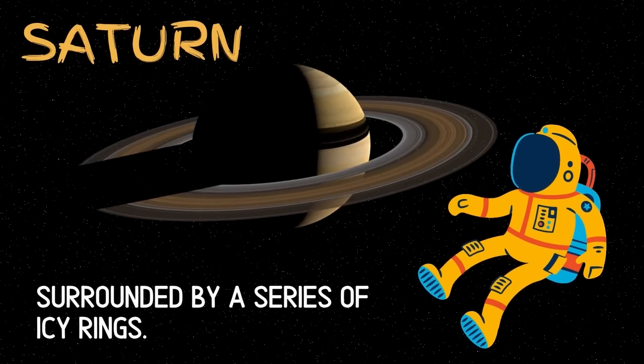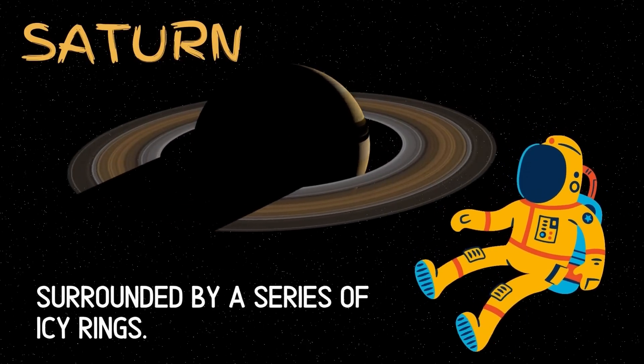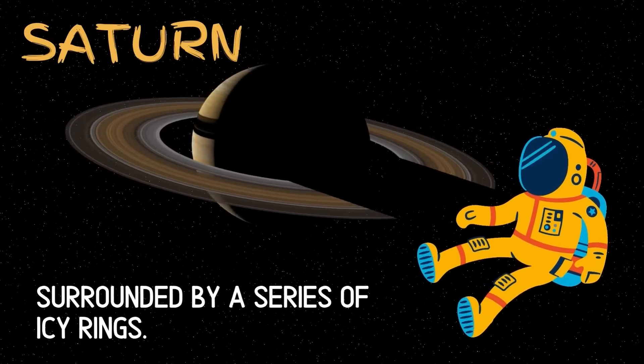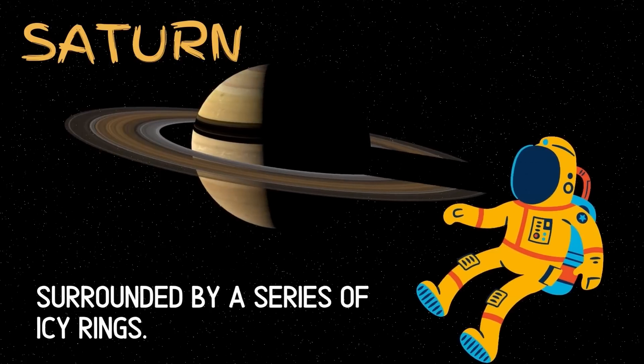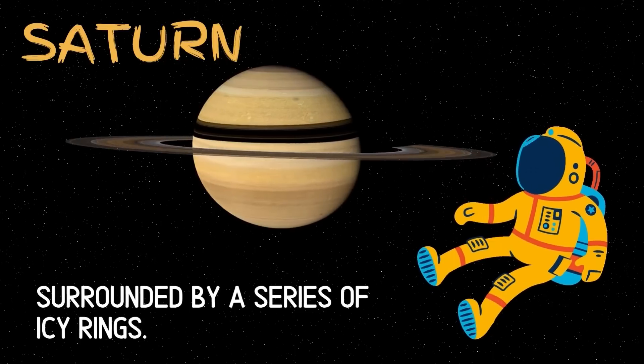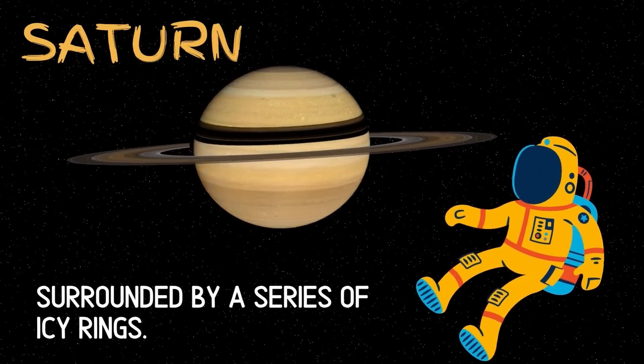Saturn is the sixth planet from the sun and the second largest planet of the solar system. It is surrounded by beautiful rings. The rings are made of ice and rocks.